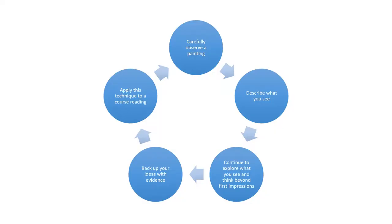A great way to start thinking critically is to practice by looking at a piece of art and using the Visual Thinking Strategy, or VTS. Observe a painting and describe what you see. Continue to explore what you see, thinking beyond first impressions. Back up your ideas with evidence. Finally, move from using this strategy with a painting to using it with a course text or reading assignment.